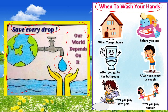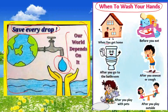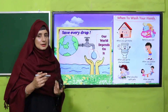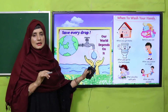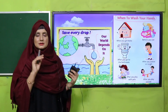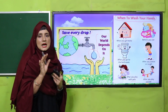Next, there is a chart about 'When to Wash Your Hands.' This chart gives us a message about when it is compulsory to wash our hands — when you get home, after you go to the bathroom, after you play with pets, after you sneeze or cough, before you eat, after you play outside. So this chart is also not useless — all charts have a purpose and you have to find it.